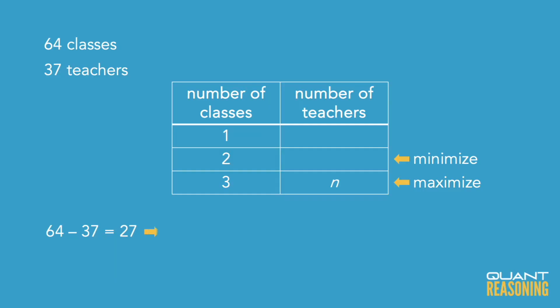If we don't want to give any teachers just a second class, we want to give as many as possible a second and a third class — two extra classes each for as many teachers as possible. There are 37 teachers, so that's plenty, but there are only 27 classes remaining. Unfortunately, 27 is an odd number, so we can't give them out two-for-you, two-for-you. There would be one remainder. So one teacher will get two classes in this extreme scenario, but 13 teachers will get an extra two classes each. 27 divided by 2 is 13, remainder 1. In this extreme scenario, we have 37 teachers, of whom 13 have three classes.